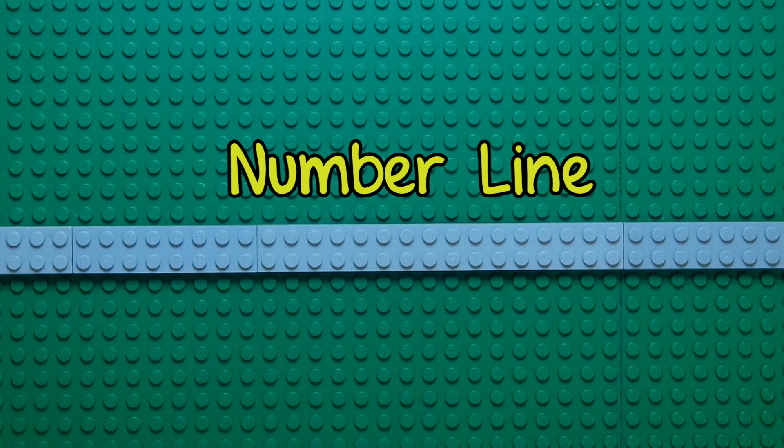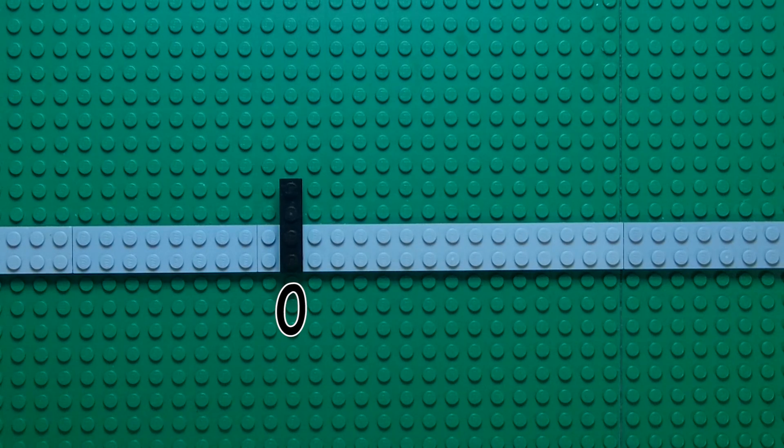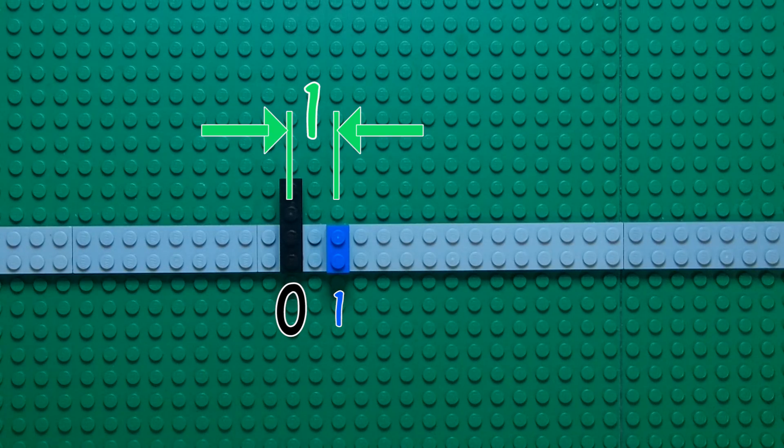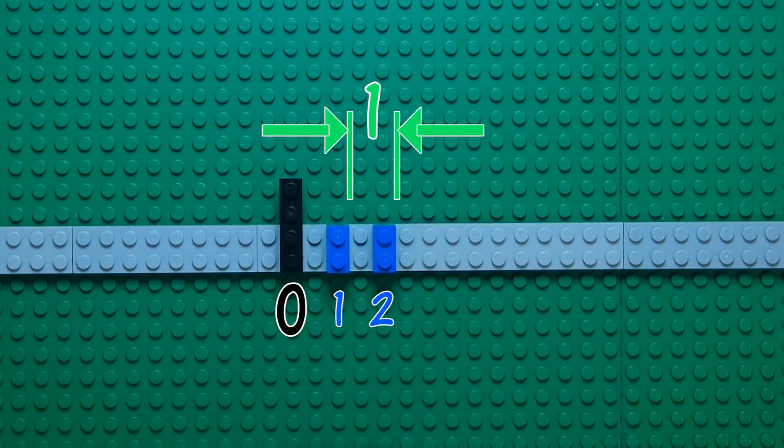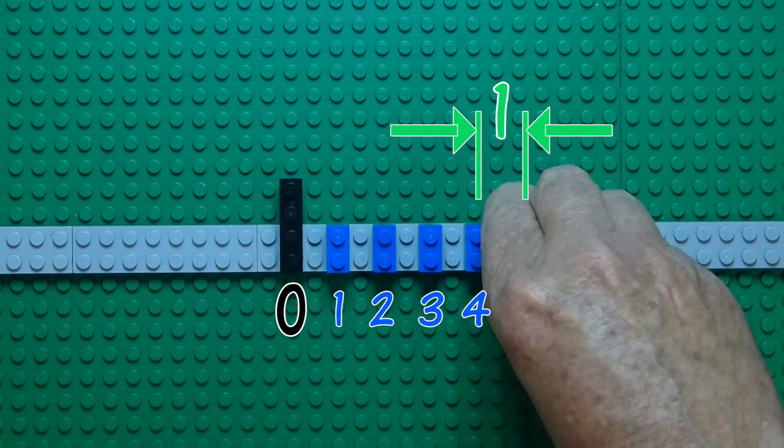Let's pick a spot to call 0 and another spot to call 1. Now we can mark off whole numbers that are each 1 apart: 2, 3, 4, etc., forever.